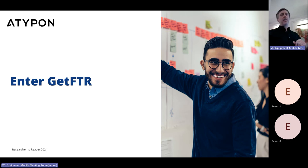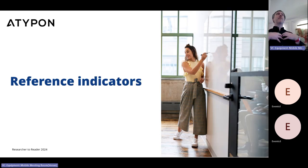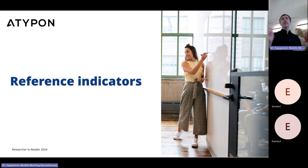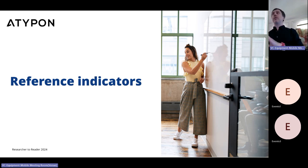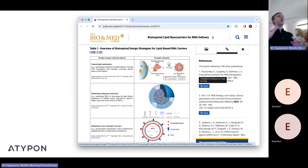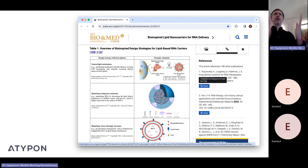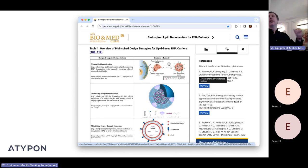What does that mean for us as platform providers? We can put reference indicators on the references to tell the user which things they're going to have access to and which maybe they're not — all about trying to remove that fear, uncertainty, and frustration from the flow from the article you're looking at to the references.